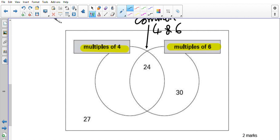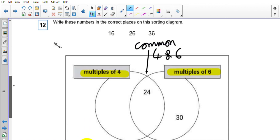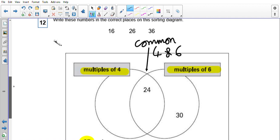27, interestingly, is hanging out here outside of our circles on our Venn diagram, because it is not a multiple of 4, and it is not a multiple of 6. And I would know that straight away, because 27 is an odd number, so it's not going to be in a multiple of an even number. I can use my number knowledge to help me out with that.